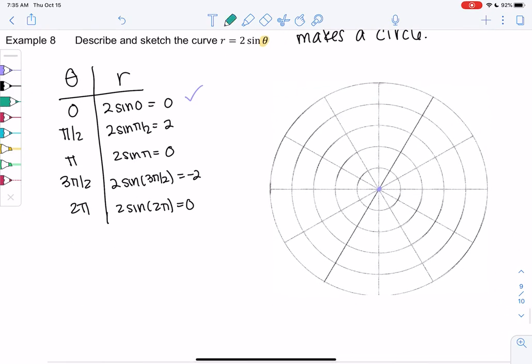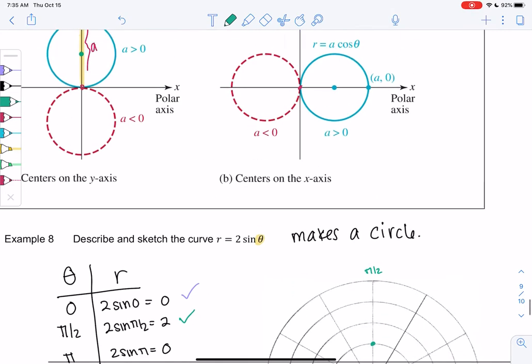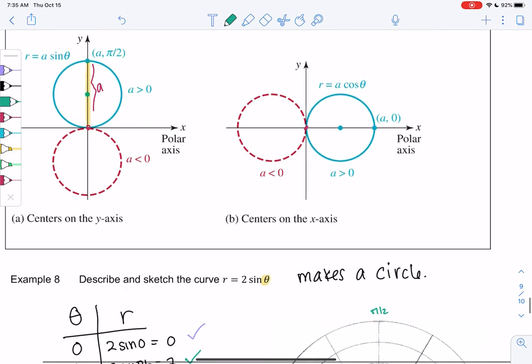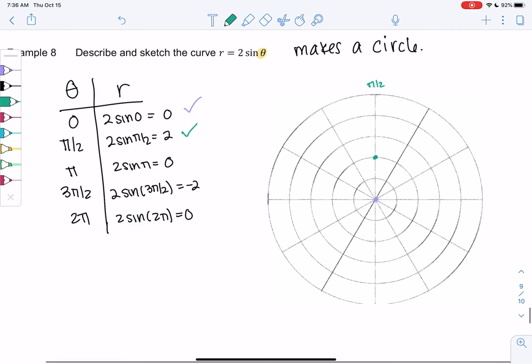Then π/2, we go out to 2. π/2 is right here. So it looks like we probably have the circle on top. It looks like it's going to be this case, but let's see what happens. Then π brings me back to 0, so we're just back here. My guess is we're making circular motion out and in.